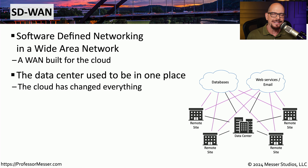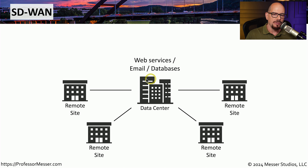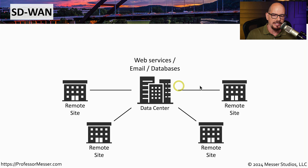We used to have everything in one data center. Anytime we needed to access our email or perform a query on a database, we simply accessed those resources in our existing data center. But now we've taken those email services and applications and moved them to the cloud. Here's a view of what we had before the cloud, where all of our services were in one centralized data center. If we had remote locations, we would simply have wide area network links from that remote site to our centralized data center, making it very easy to set up WAN connections and providing everyone with access to the data they needed.